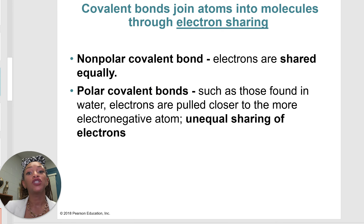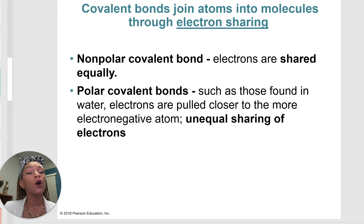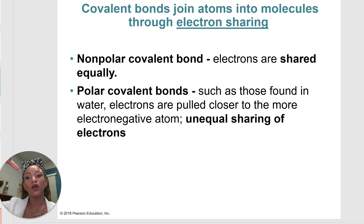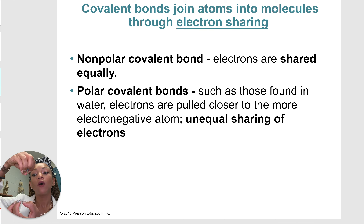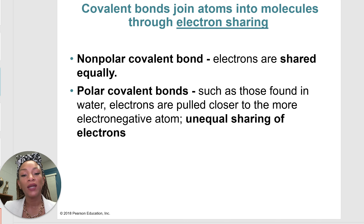Let's talk about covalent bonds. These involve electron sharing — that's the key word. The only difference is whether those electrons are equally shared or unequally shared. Non-polar covalent bonds involve equally shared electrons. Polar covalent bonds involve unequal sharing. Think of a pole — the North Pole versus the South Pole, a top and a bottom. If one element is more electronegative, it's going to attract electrons more strongly, which is where we get the unequal sharing.